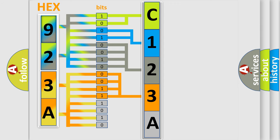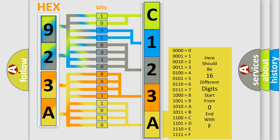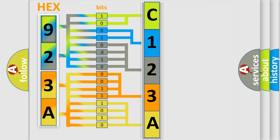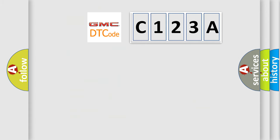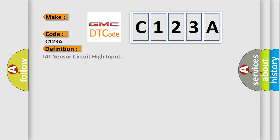A single byte conceals 256 possible combinations. We now know in what way the diagnostic tool translates the received information into a more comprehensible format. The number itself does not make sense to us if we cannot assign information about what it actually expresses. So, what does the diagnostic trouble code C123A interpret specifically for GMC car manufacturers? The basic definition is: IAT sensor circuit high input.